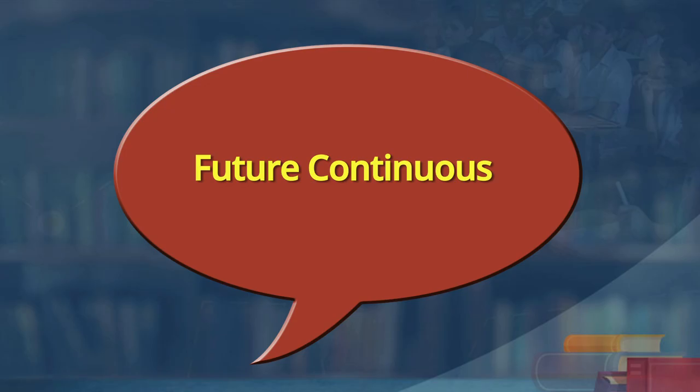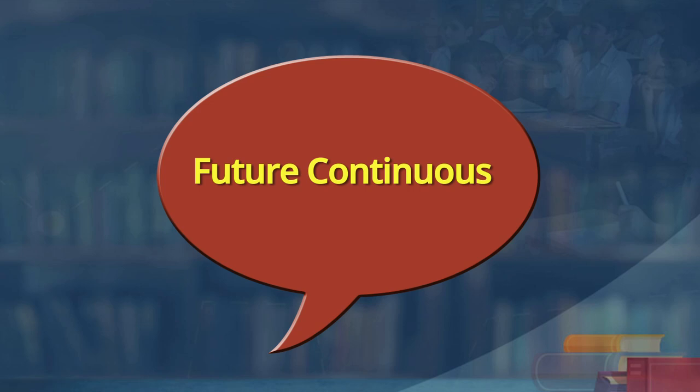Learners, we have now learnt simple future. Let us move on to future continuous tense. We are now clear when to use future simple — for a prediction, a compulsion, or any future action. So, an action which takes place in the future is referred to as future tense. Then let us say continuous — how do you see a future continuous action? It is an action which will continue in the future.